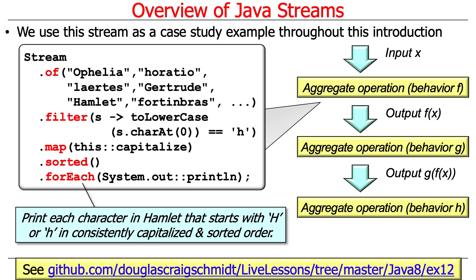We're going to use a particular case study throughout this introduction section to be concrete about what we're discussing. The example will take a stream of characters from the play Hamlet, filter out anyone whose name doesn't start with an uppercase or lowercase H, capitalize all the remaining names for consistent form, sort them in ascending order, and then print out each element that survived filtering. You can find this code in the EX12 folder in my GitHub account.